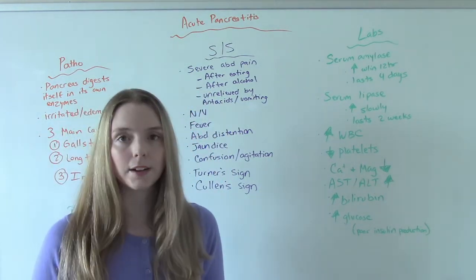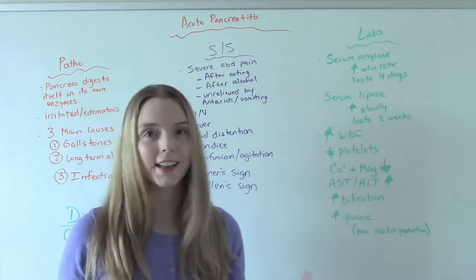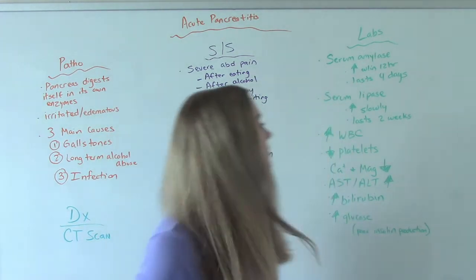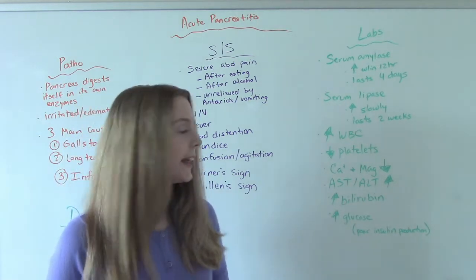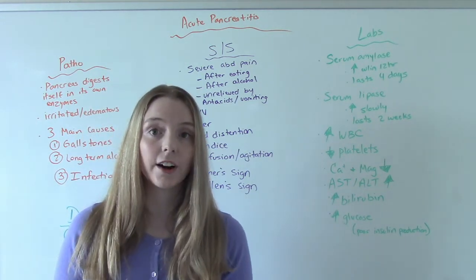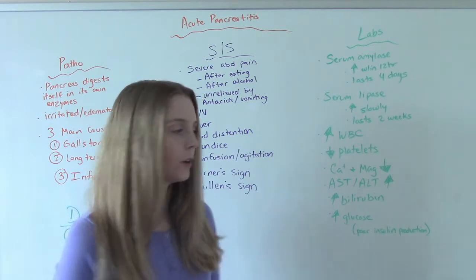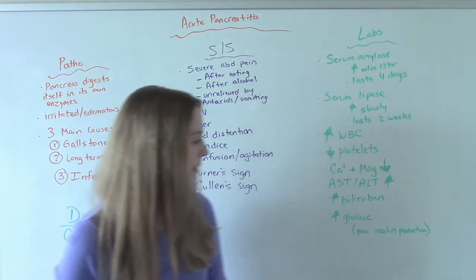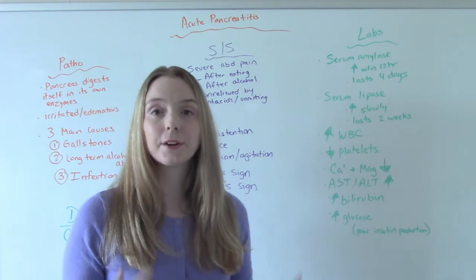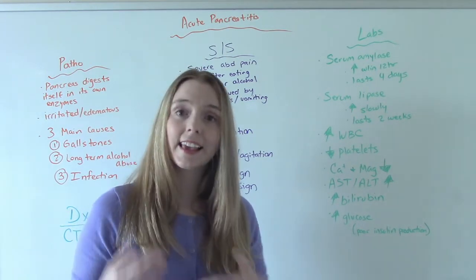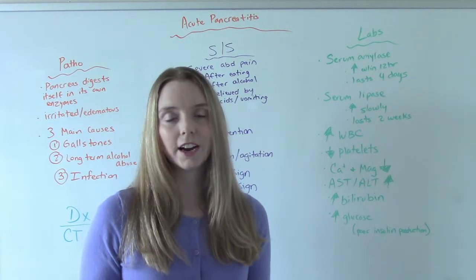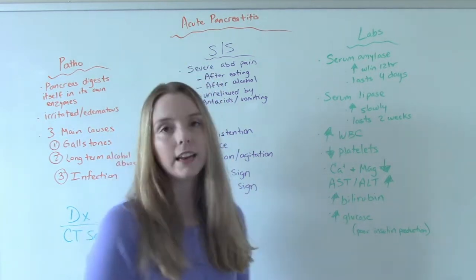We'll see an increase in their white blood cell count, either because of the stress on the body or if infection is the cause. We'll also see a decrease in platelets, a decrease in calcium and magnesium, an increase in liver enzymes — AST and ALT — an increase in bilirubin which leads to jaundice, and an increase in glucose. That happens because the pancreas isn't functioning well, leading to poor insulin production.